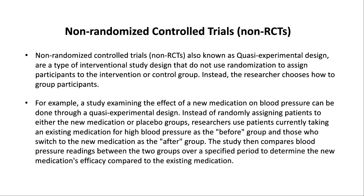Non-randomized controlled trials (non-RCTs), also known as quasi-experimental design, do not use randomization to assign participants to the intervention or control group. Instead, the researcher chooses how to group participants. For example, a study examining a new medication on blood pressure: researchers use patients currently taking an existing medication as the before group and those who switch to the new medication as the after group, then compare blood pressure readings to determine the new medication's efficacy.